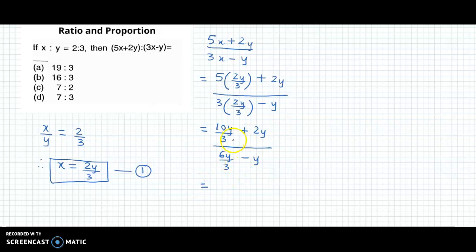Proceeding further, we could write this as 3 times 2y is 6y. So in the numerator we have 10y plus 6y divided by 3. Now 3 times y would be 3y, so we have 6y minus 3y upon 3. We cancel the 3s.